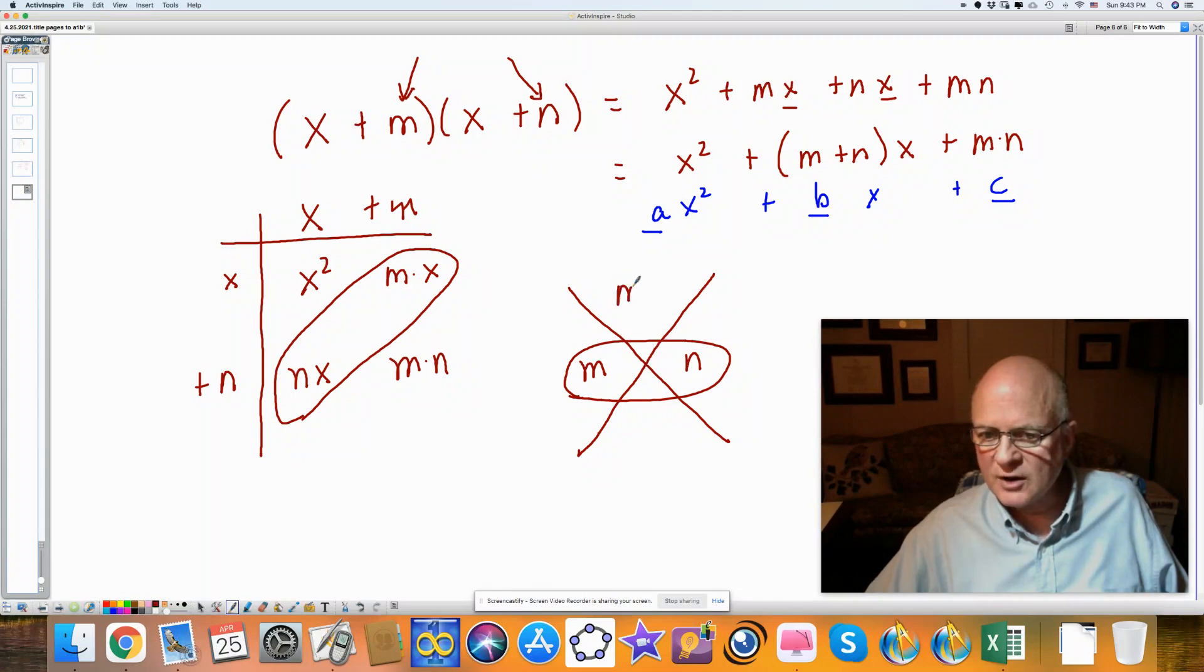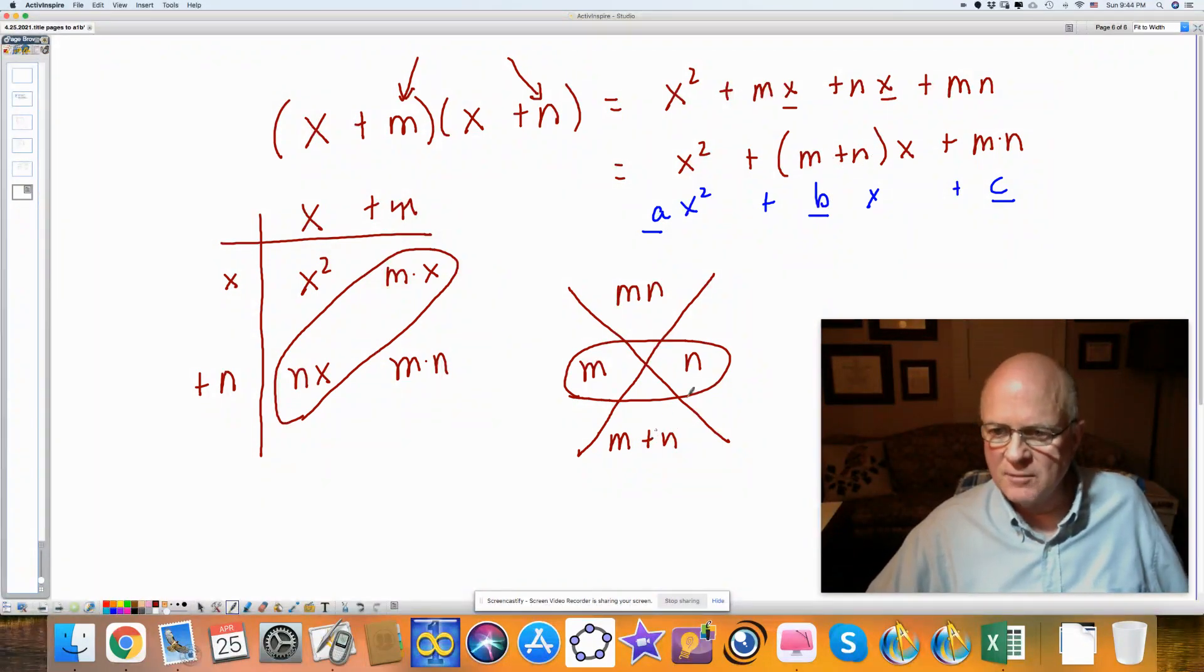And if you look at their product on the top, it's m times n, and their sum on the bottom, m plus n. Well, this term, this b term, is the sum, and this c term is the product.